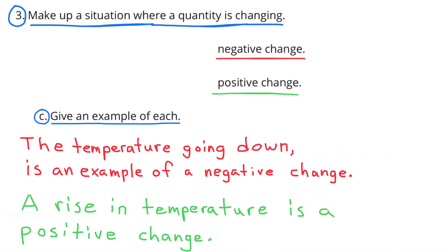C. Give an example of each. Negative change: The temperature going down is an example of a negative change. Positive change: A rise in temperature is a positive change.